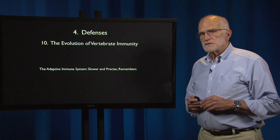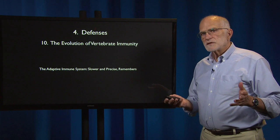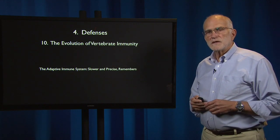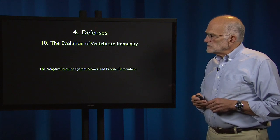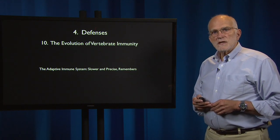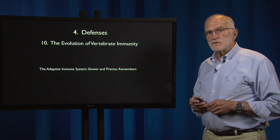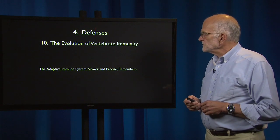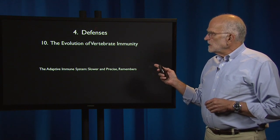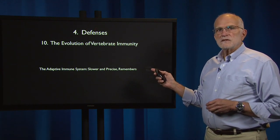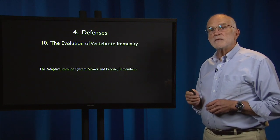The vertebrate adaptive immune system is one of the most complex and most beautiful pieces of biological architecture that we know of. Its complexity, precision, and power indicate a long history of coevolution with pathogens. The adaptive immune system is slower and more precise than the innate immune system, and it has the capacity for memory.